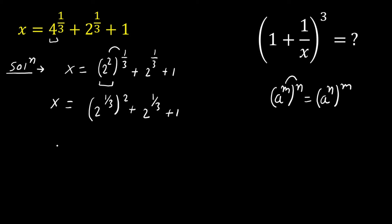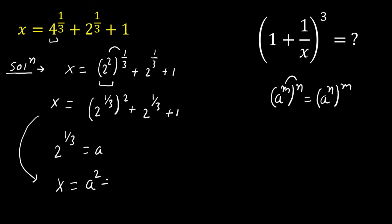Now substitute 2^(1/3) = a. Then this equation becomes x = a² + a + 1.